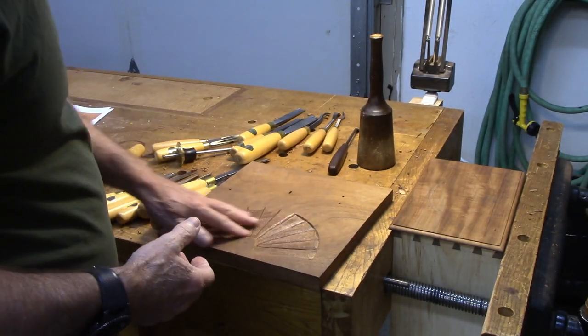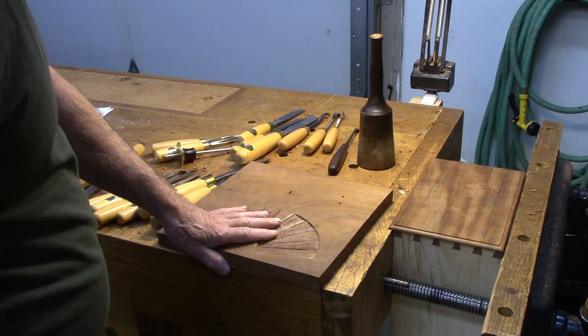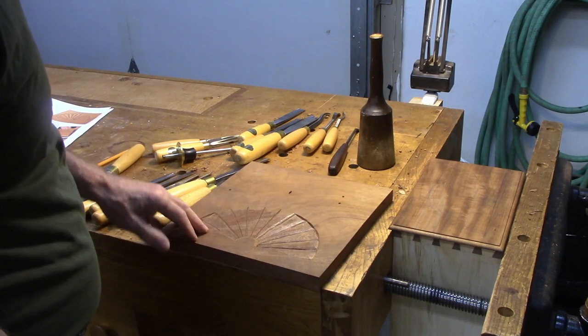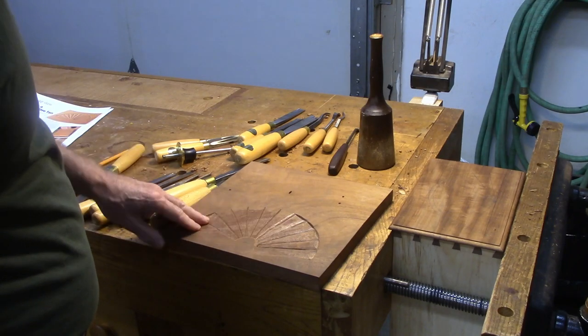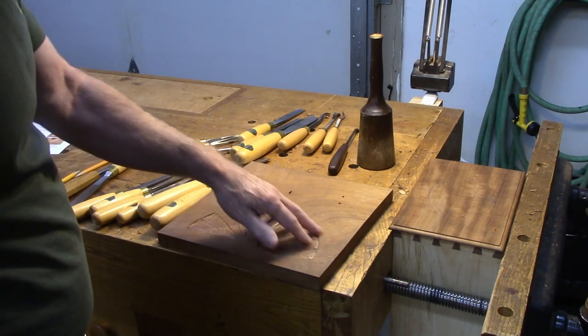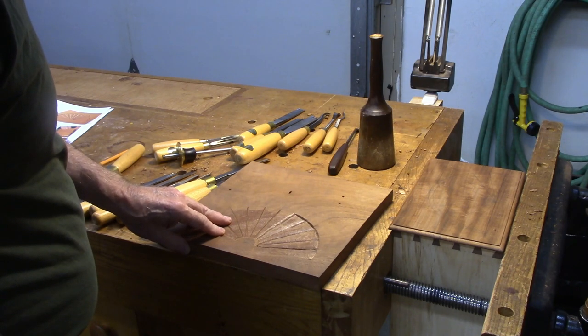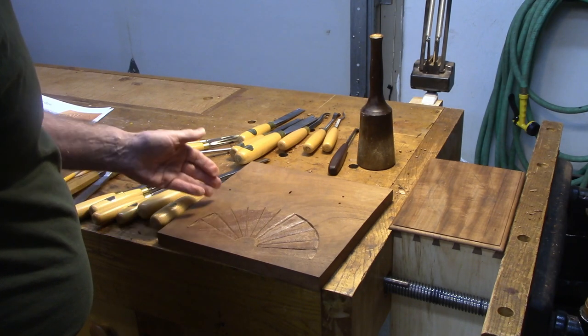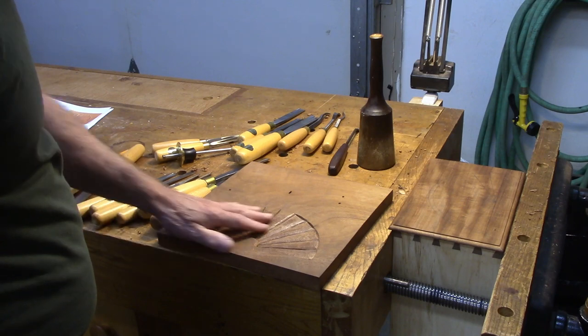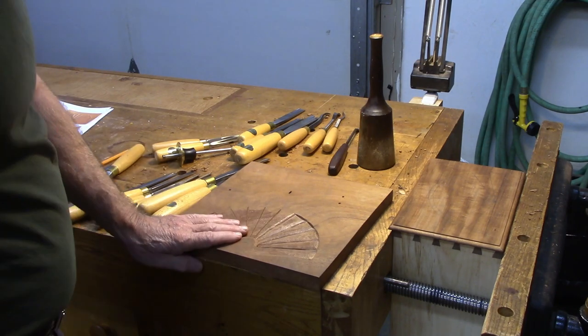I thought I'd practice a little bit before I got started since the drawer is already assembled and I don't want to mess it up. I've got about half of it carved here. I laid it out the same way that I'm going to do the actual one. It's pretty straightforward, you just got to watch which way the grain is going.